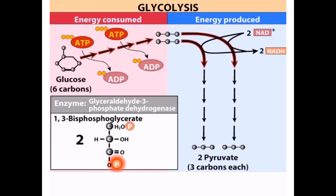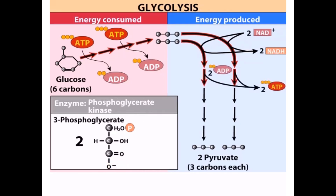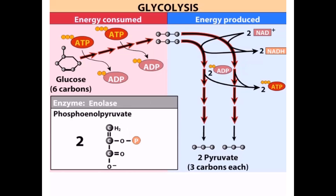3-phosphoglycerate is then converted to 2-phosphoglycerate. The next reaction produces phosphoenol pyruvate, which is the second high-energy intermediate in glycolysis. The hydrolysis of the high-energy phosphate of phosphoenol pyruvate is coupled to the synthesis of ATP from ADP.